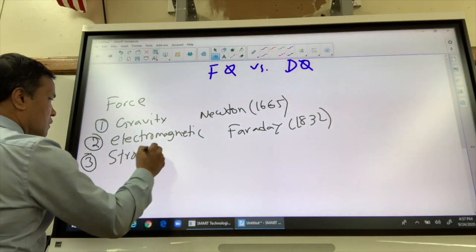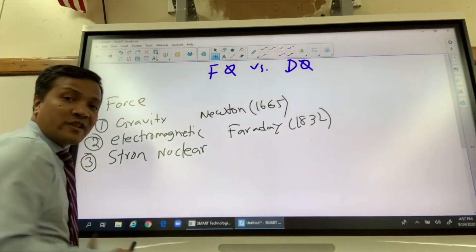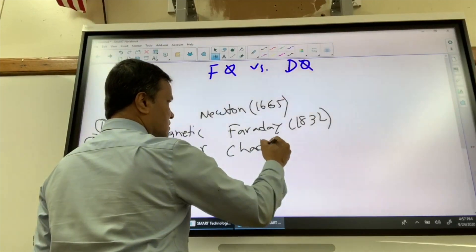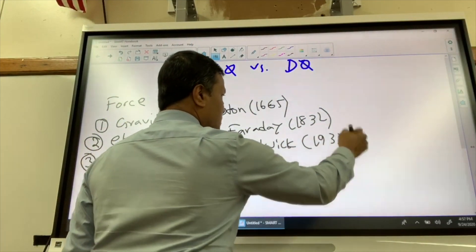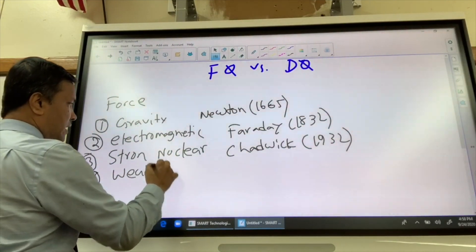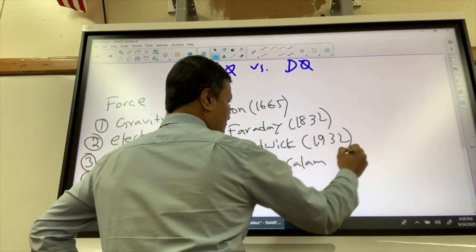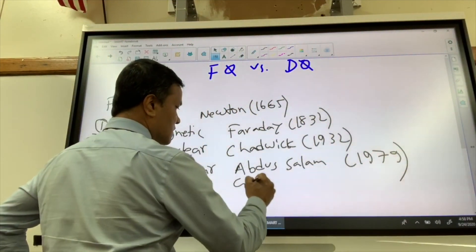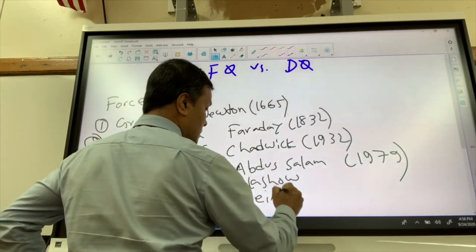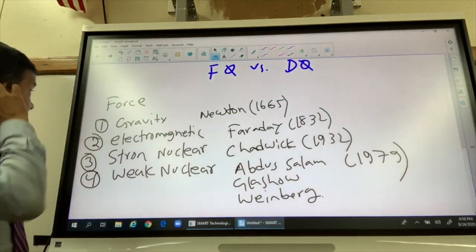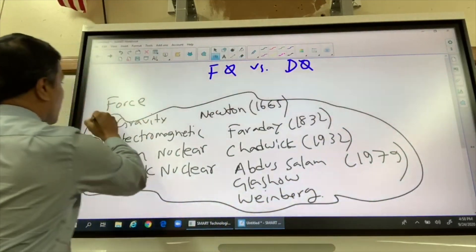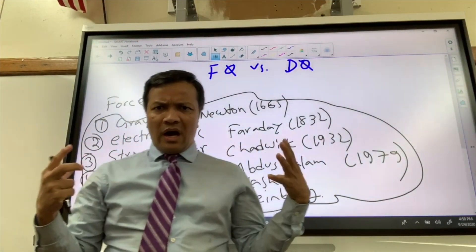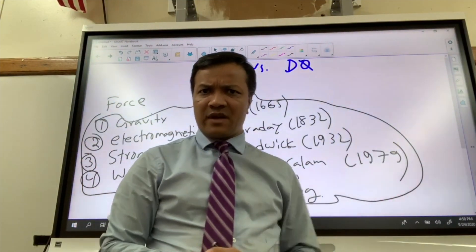Number three is the strong nuclear force, discovered about 100 years after the electromagnetic force, discovered in 1932. Number four is the weak nuclear force, discovered in 1979. So these are the four examples of force. Now let's get back to business — I'm going to show you why force is a derived quantity and not a fundamental quantity.